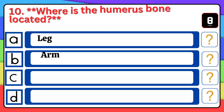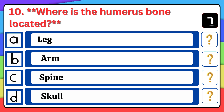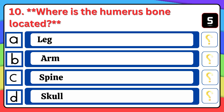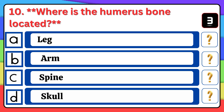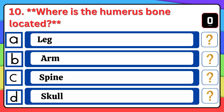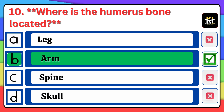Question number ten: Where is the humerus bone located? Correct answer: Option B — Arm.